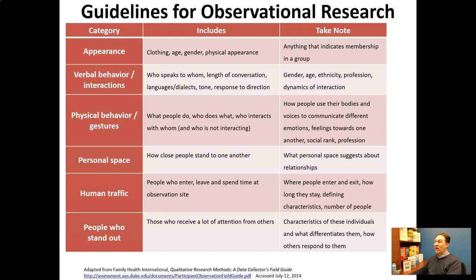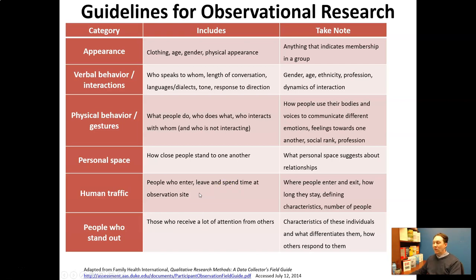What should we be looking for? Some things we can observe include appearance, verbal behavior, interactions, physical behavior or gestures, personal space, human traffic, and people who stand out. Appearance can include clothing, age, gender, or physical appearance. Verbal behavior includes who speaks to whom, length of conversation, languages or dialects, tone, and response to direction. Physical behavior covers what people do, who does what, who interacts with whom, and who's not interacting. Personal space looks at how close people stand. Human traffic covers people who enter, leave, and spend time at an observation site — particularly useful in retail or public spaces for understanding flow patterns.